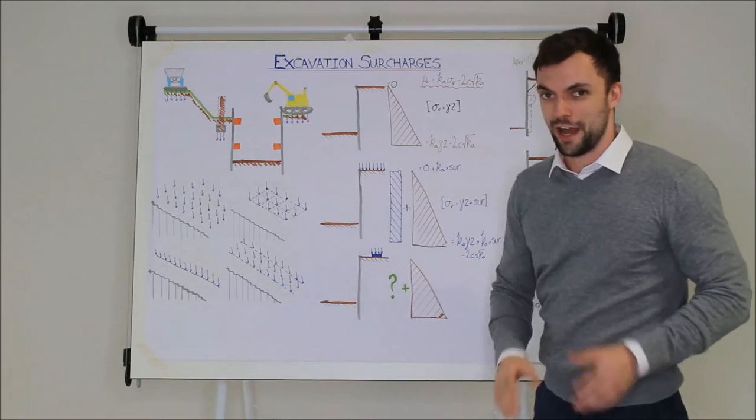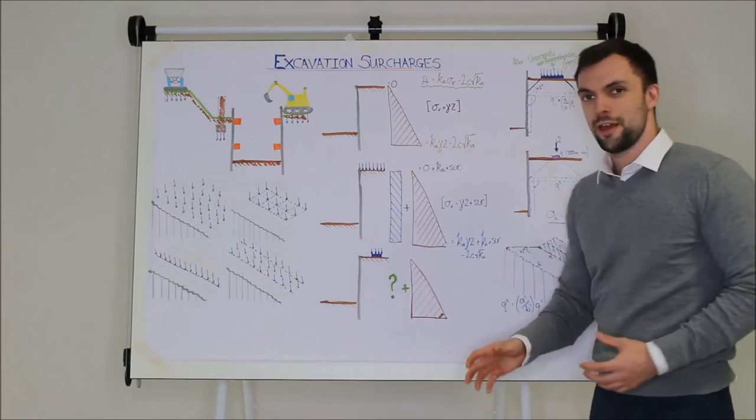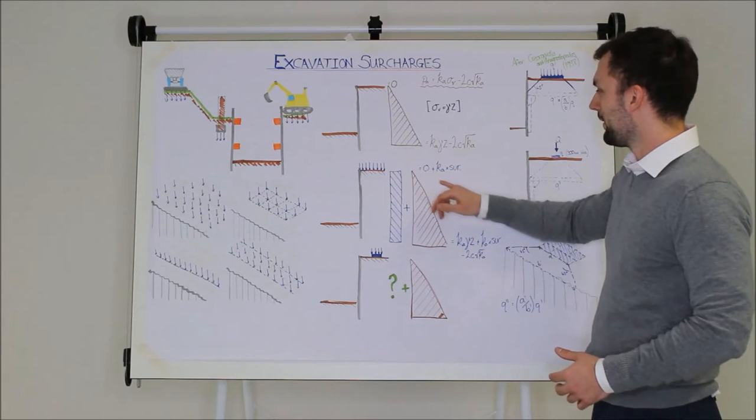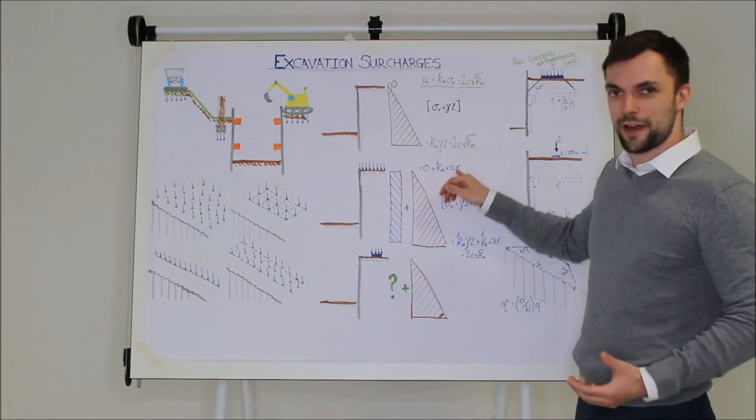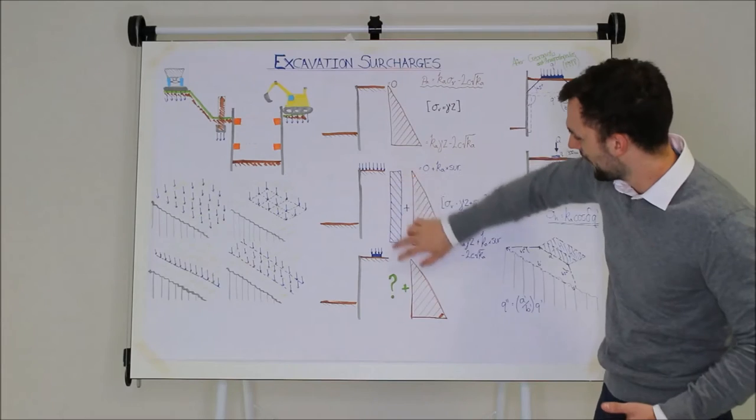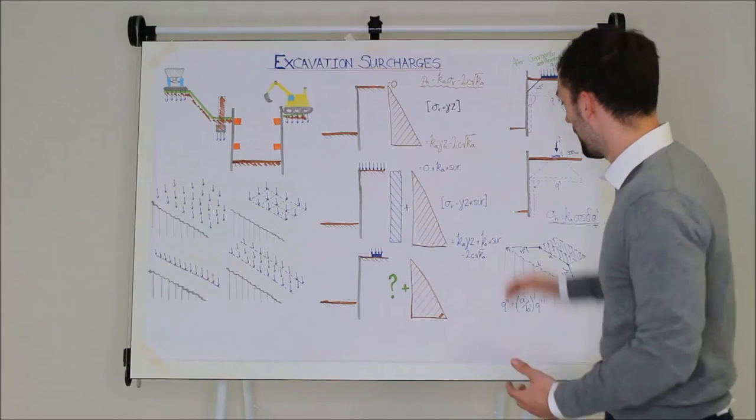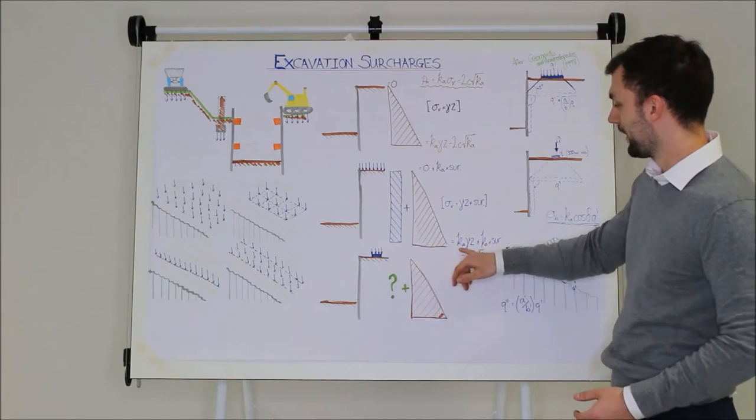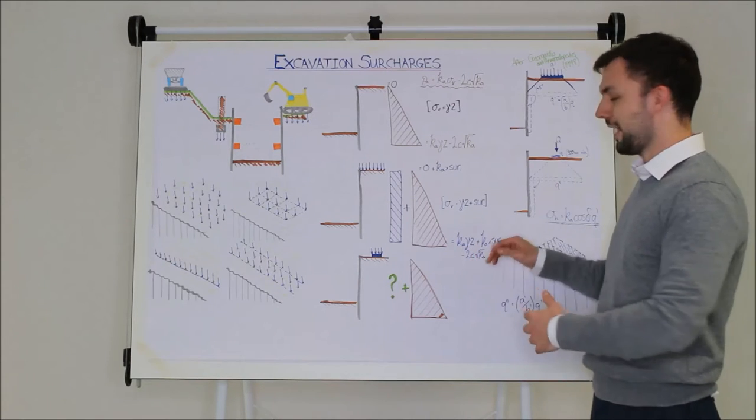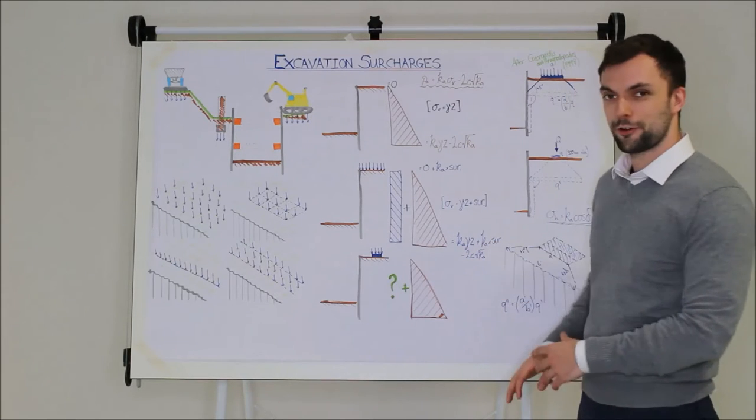Now when we add a blanket surcharge, this is why it's the easiest to deal with. Instead of starting at zero, you start at Ka times the value of that surcharge. So you're basically just adding a big block onto it, so that's nice and easy to deal with. And then at the end you just end up with the same again. Ka gamma z plus Ka times your surcharge, take off your bit for cohesion.